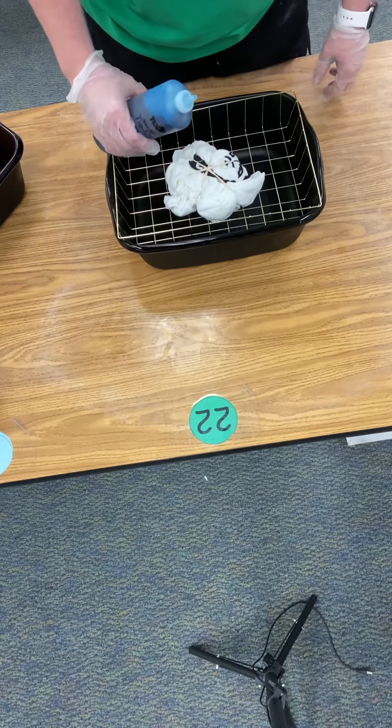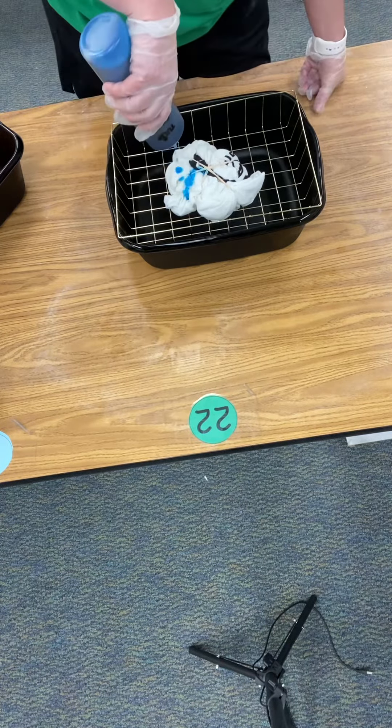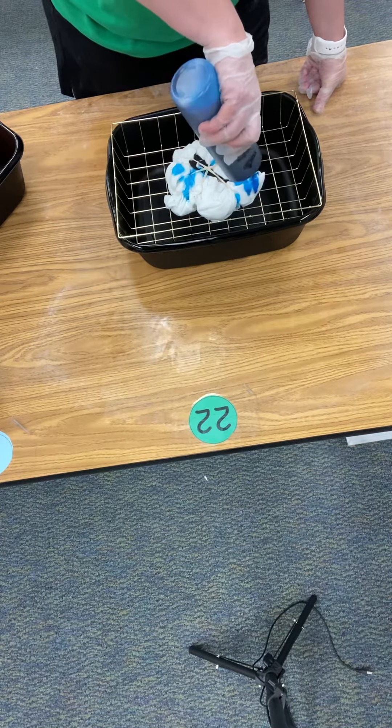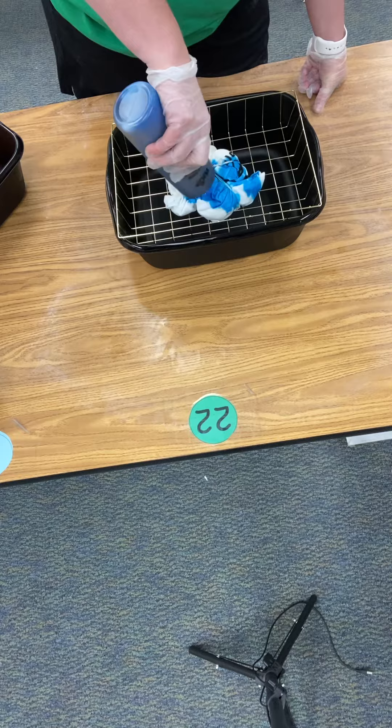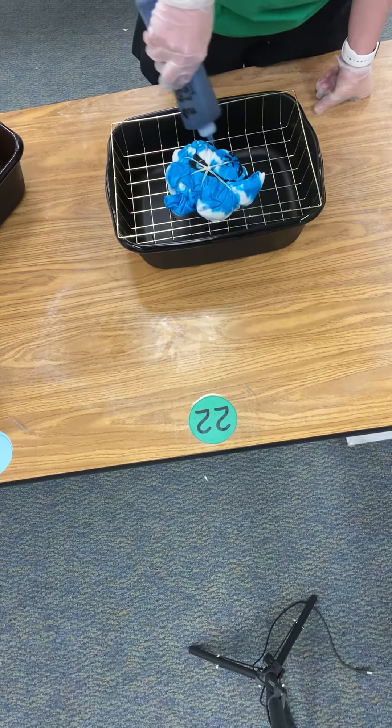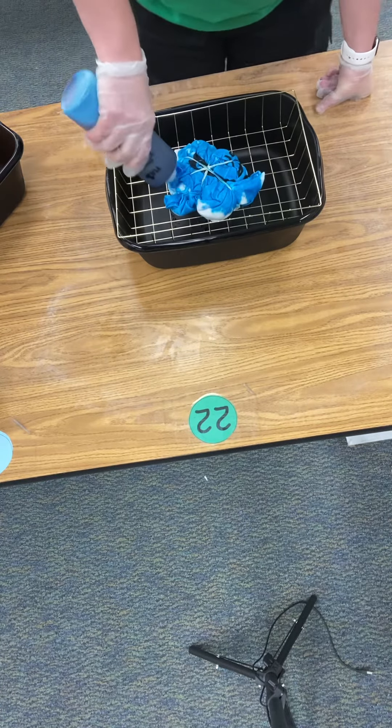So you're going to take your bottle and at first you're just going to tip it over. You're not going to squeeze, so just tip it over and it just comes out a little tiny bit. Then once it's all the way tipped over, you can start squeezing and you put it all over everything.